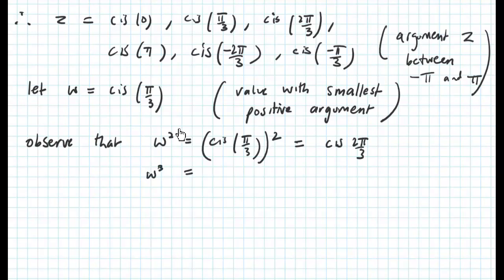If you look at w squared, this is equal to cis pi on 3 squared, which when we simplify becomes cis 2 pi on 3. w cubed becomes cis pi.